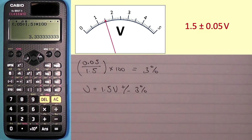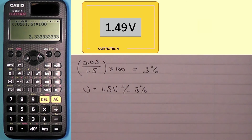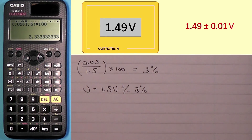Now, if I was using a digital device — the Smithotron 2000 — it's measuring the voltage as 1.49 volts. Because this is a digital device, the reading uncertainty would be plus or minus 1 in the last digit. The first digit is volts, the second digit is tenths of a volt, and the last digit — the 9 — is hundredths of a volt. So it would be plus or minus 1 in that last digit, meaning the reading 1.49 volts with its reading uncertainty would be 1.49 ± 0.01 volts. This is an absolute uncertainty, so the reading uncertainty is in its absolute form.